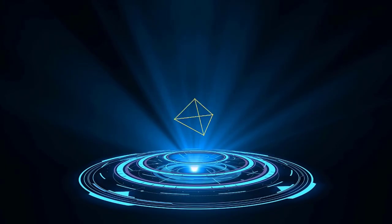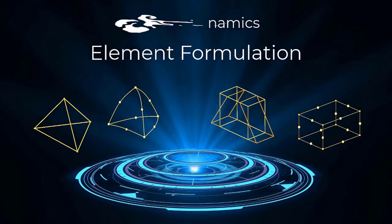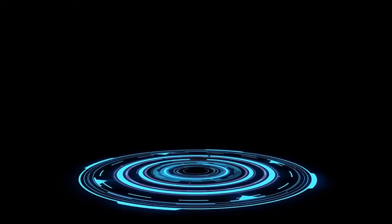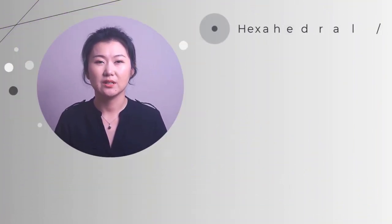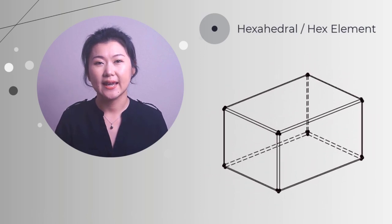In this lesson, we'll discuss these topics for several solid element types so that you can make better element choices in explicit dynamic simulations. Now, let's get started. In this lesson, we'll mainly focus on solid elements, that is, 3D elements. Let's start with a hexahedral element, or hex element. It has six quadrilateral faces and eight vertices.